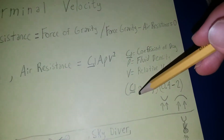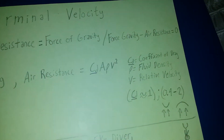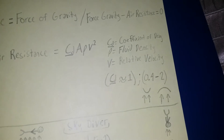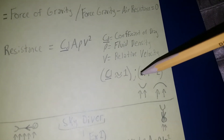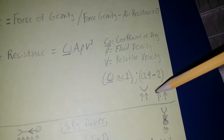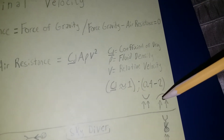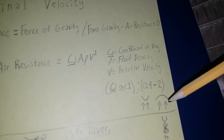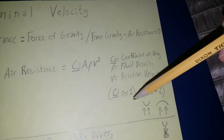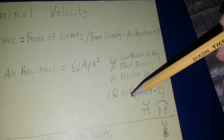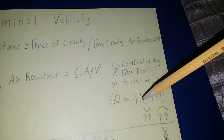The coefficient of drag is usually about 1 for a flat surface, about 0.4 for the most aerodynamic surfaces, and about 2 for the least aerodynamic surfaces such as a parachute. You can generally approximate it as 1 unless an object is specifically designed otherwise.